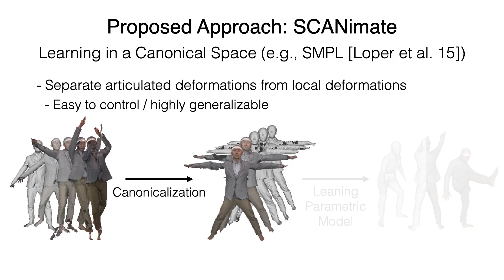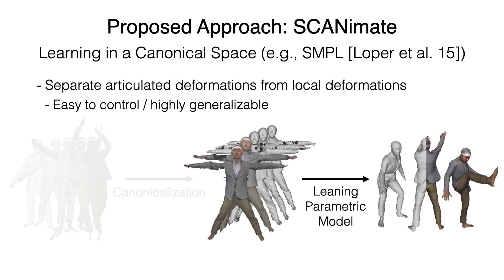Scanimate consists of two stages. First, we remove articulated deformations to put all scans into a neutral pose. Then we learn a parametric model in the canonical space. This allows a neural network to focus on modeling local deformations.